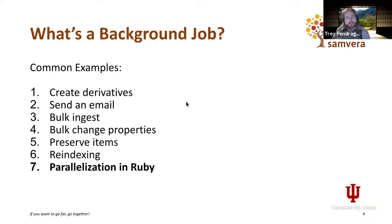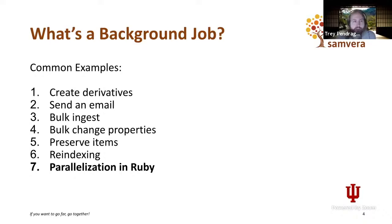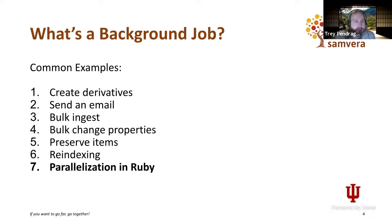So why might you want to do this? Some really common examples are creating derivatives, sending an email, doing bulk ingest, changing properties, preserving items, and re-indexing. All of those are cases where how long it takes determines whether you want to put that thing in the background. Another use case is any time you want to do parallelization in Ruby — splitting a process up across multiple backend servers is a way to get things done faster.